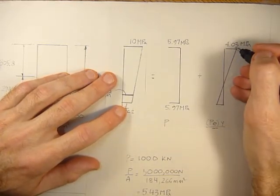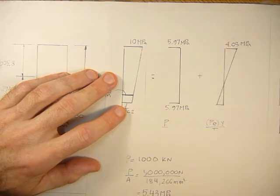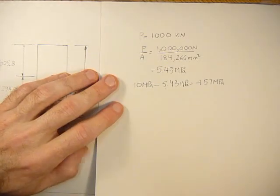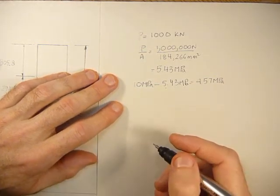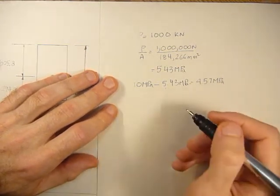Before it was 4.03, now by varying to 1,000, this comes to 4.57. And then we can just use PEY over I to equal the stress of 4.57 and solve for the new E.